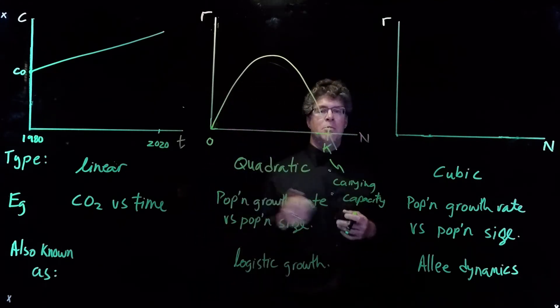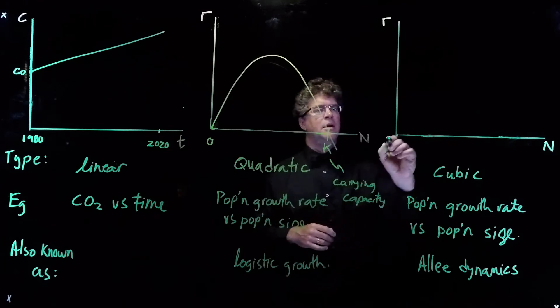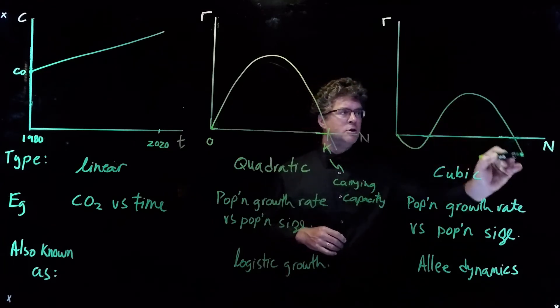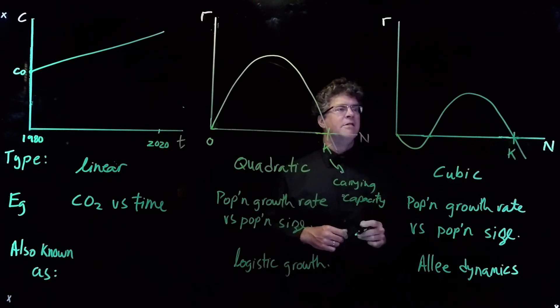Population growth rate has also been modeled with a cubic function. Here the shape is a little different. And the cubic function that we're interested in looks like this here.